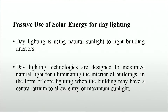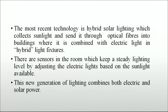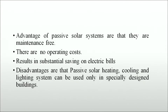Day lighting is using natural sunlight to light building interiors. Day lighting technologies maximize natural light for illuminating building interiors. The most recent technology is hybrid solar lighting, which collects sunlight and sends it through optical fibers into buildings, combined with electric light in hybrid light fixtures. Sensors in the room maintain a steady lighting level by adjusting the electric lights based on available sunlight. Advantages of passive solar systems include being maintenance free with no operating costs, resulting in substantial savings on electric bills.